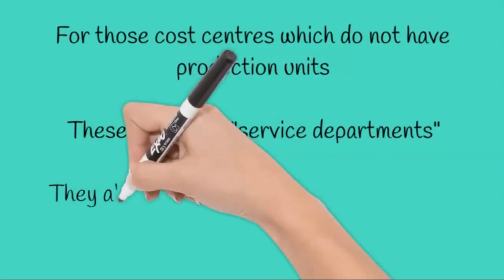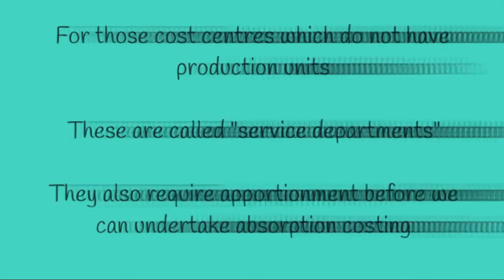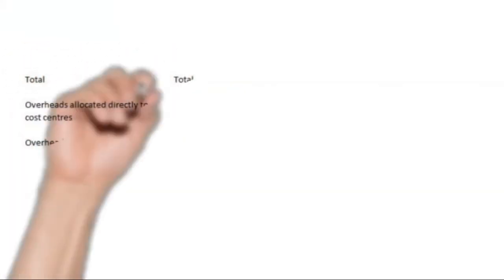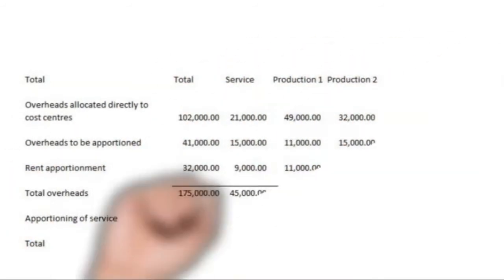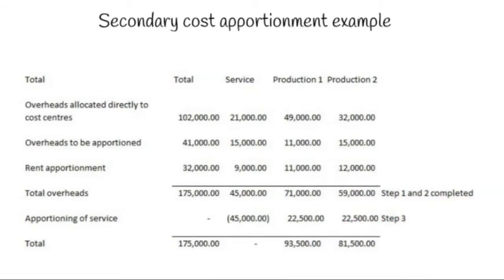A service cost centre might be HR who serve an entire company but their costs have to be spread across all the different production cost centres. If we look at another example, we have a service department with £45,000 of total overheads, production cost centre one with £71,000 and production cost centre two with £59,000.